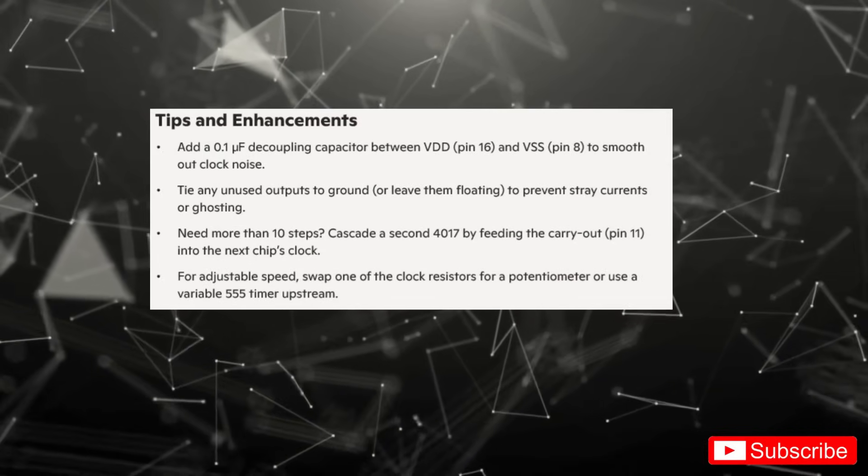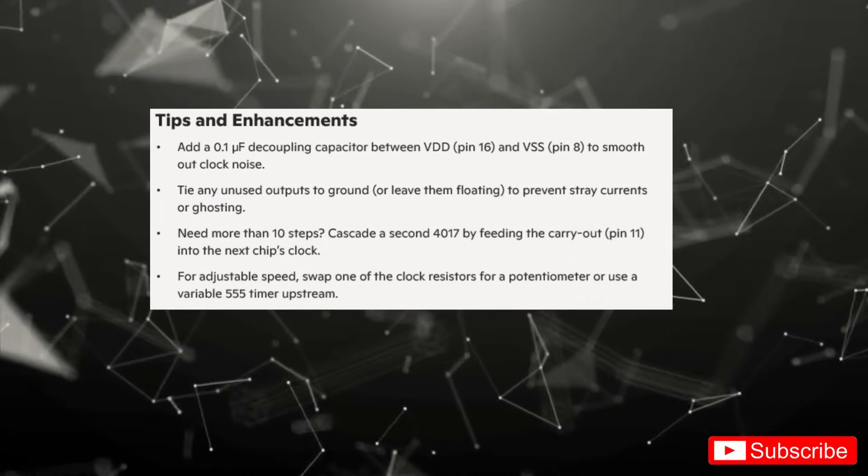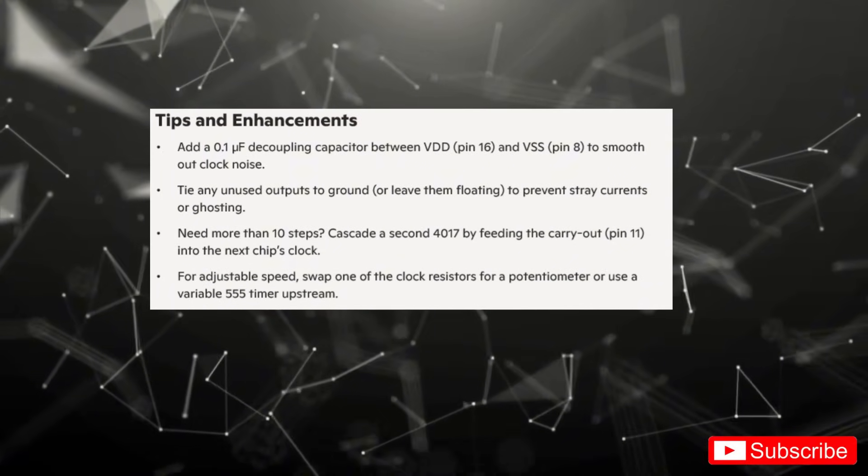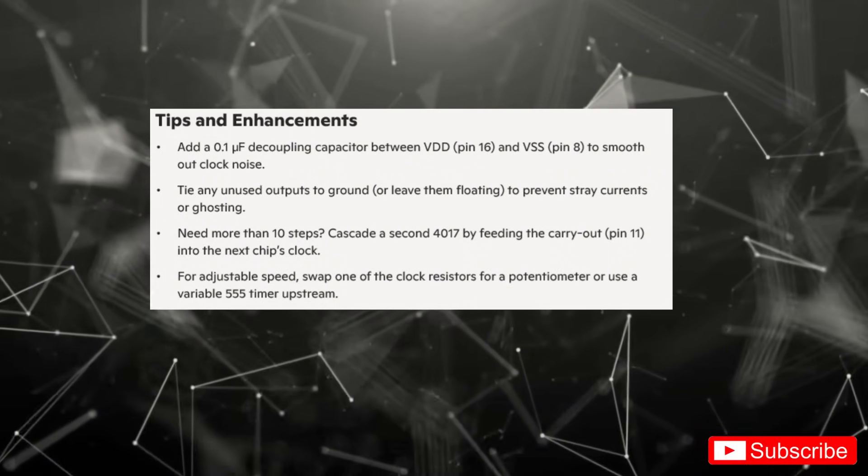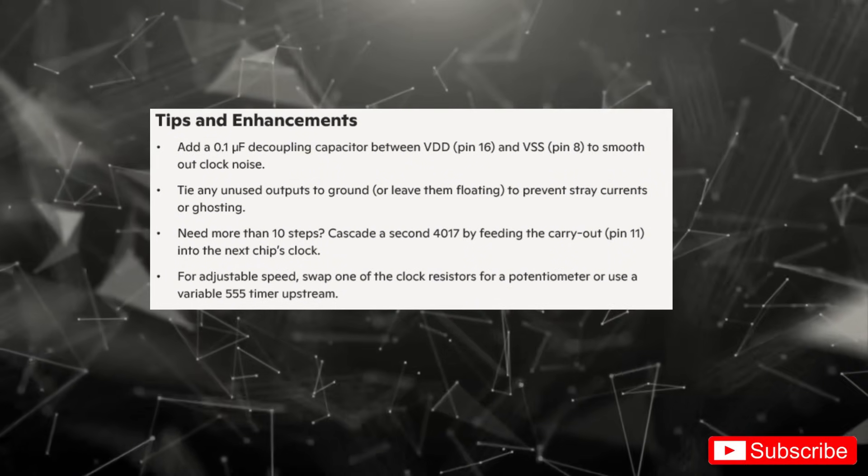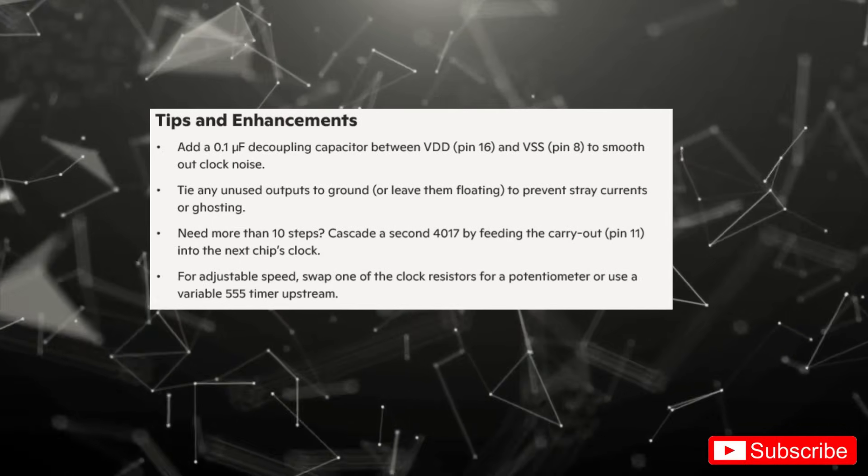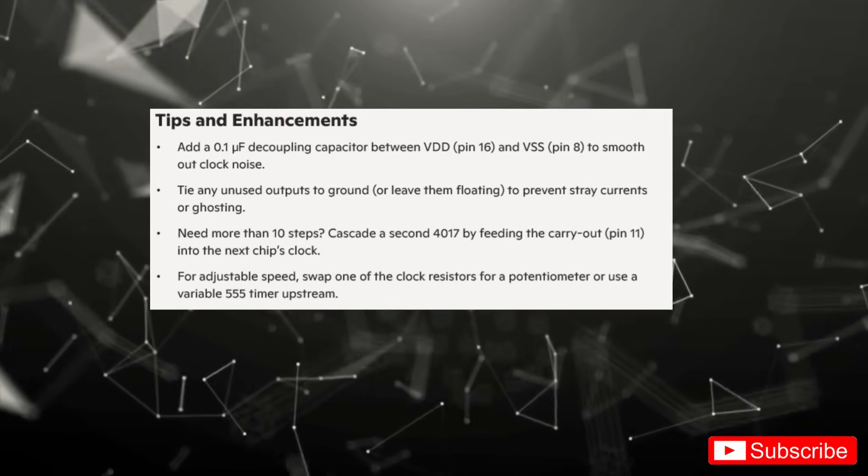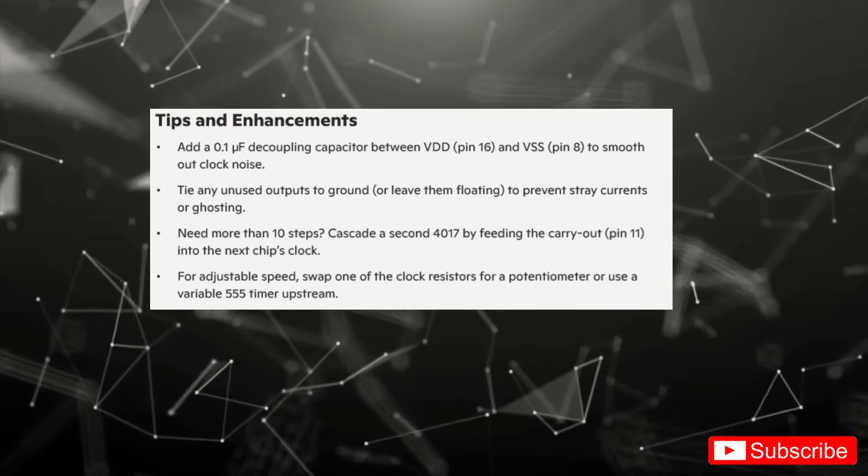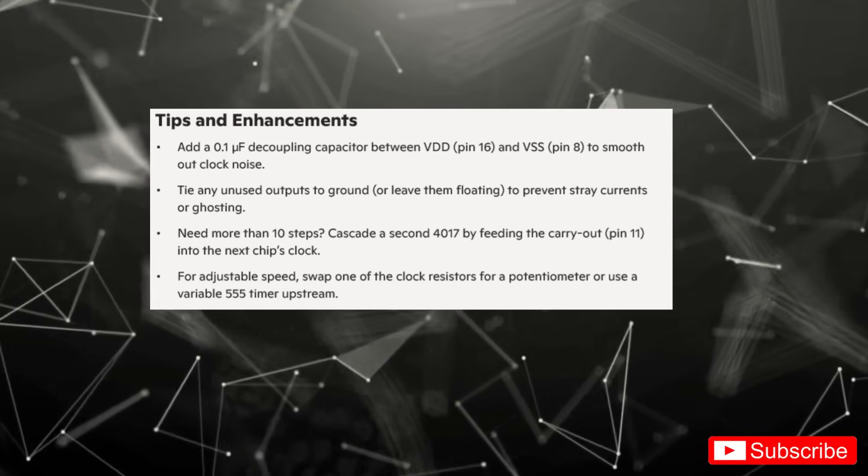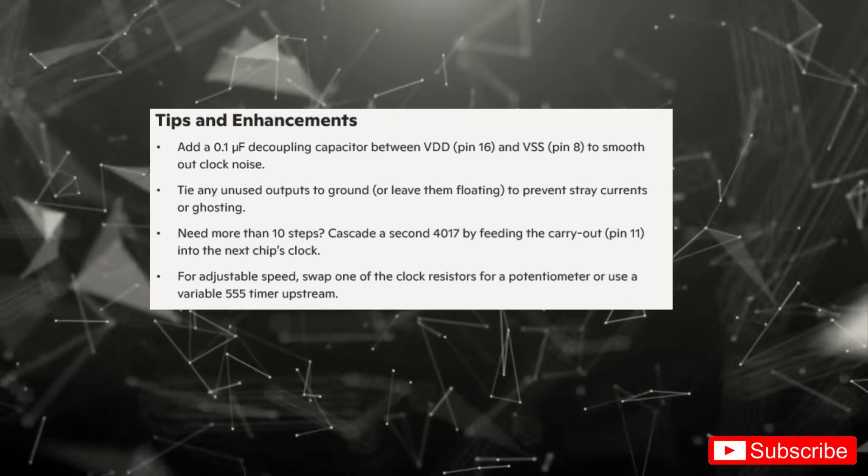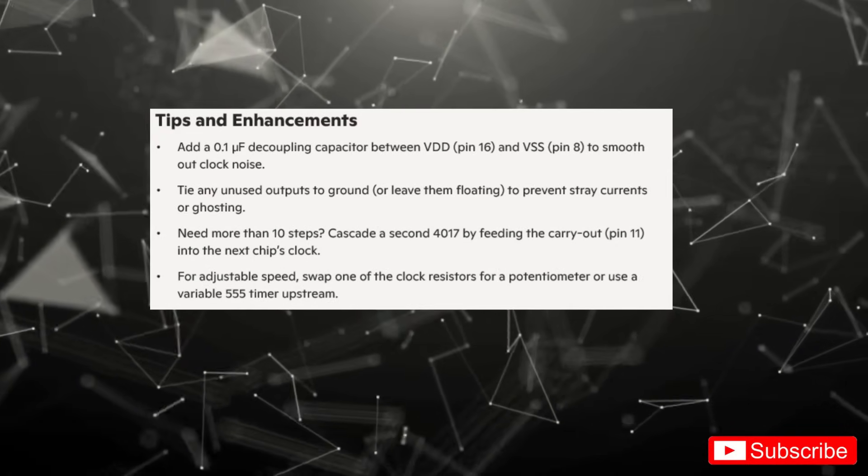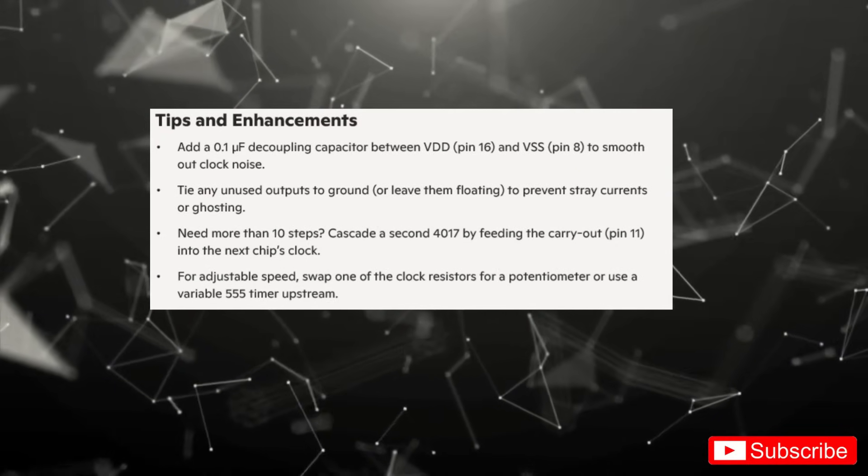Tips and enhancements. Add a 0.1 microfarad decoupling capacitor between VDD pin 16 and VSS pin 8 to smooth out clock noise. Tie any unused outputs to ground or leave them floating to prevent stray currents or ghosting. Need more than 10 steps? Cascade a second 4017 by feeding the carryout pin 11 into the next chip's clock. For adjustable speed, swap one of the clock resistors for a potentiometer or use a variable 555 timer upstream.